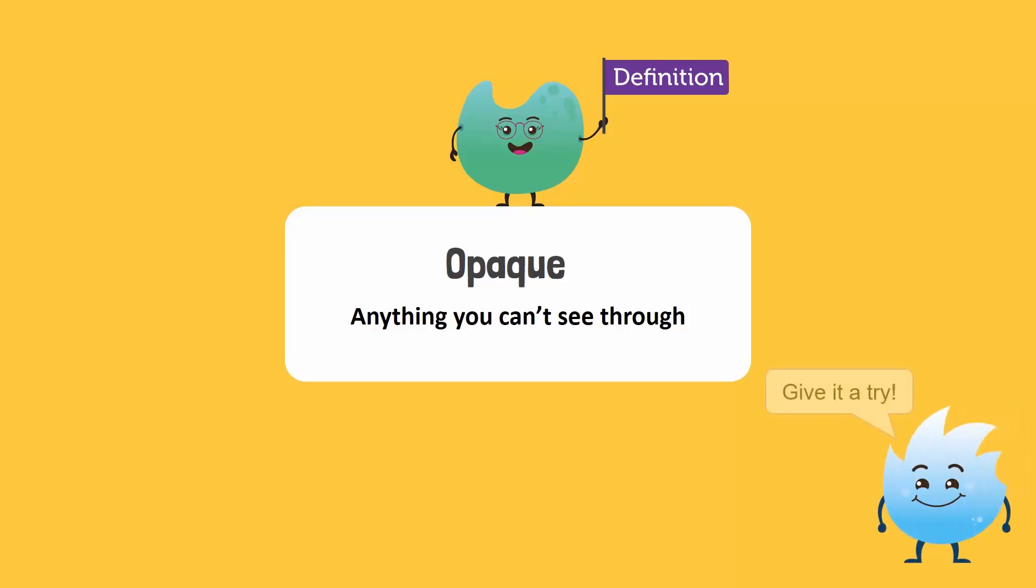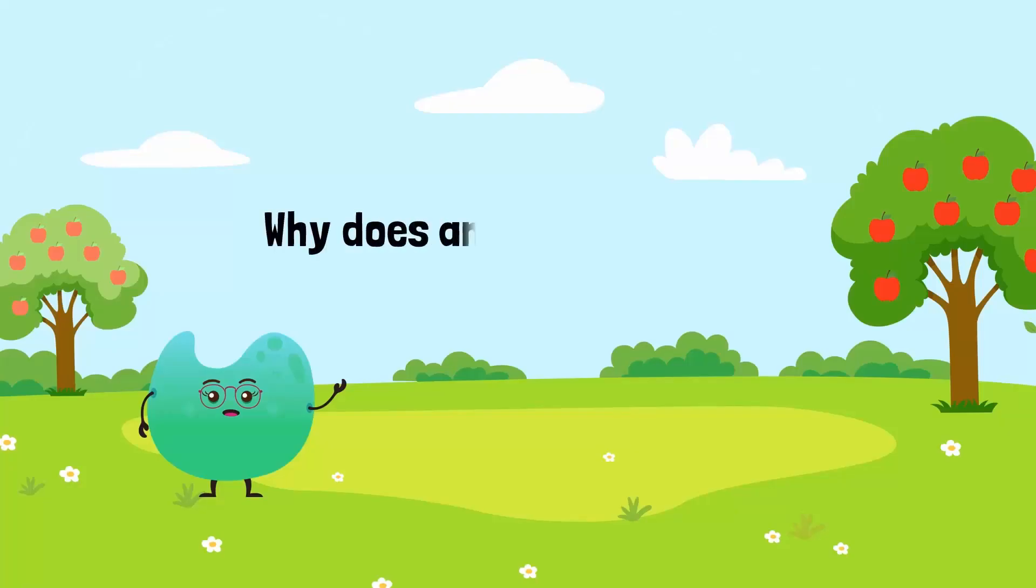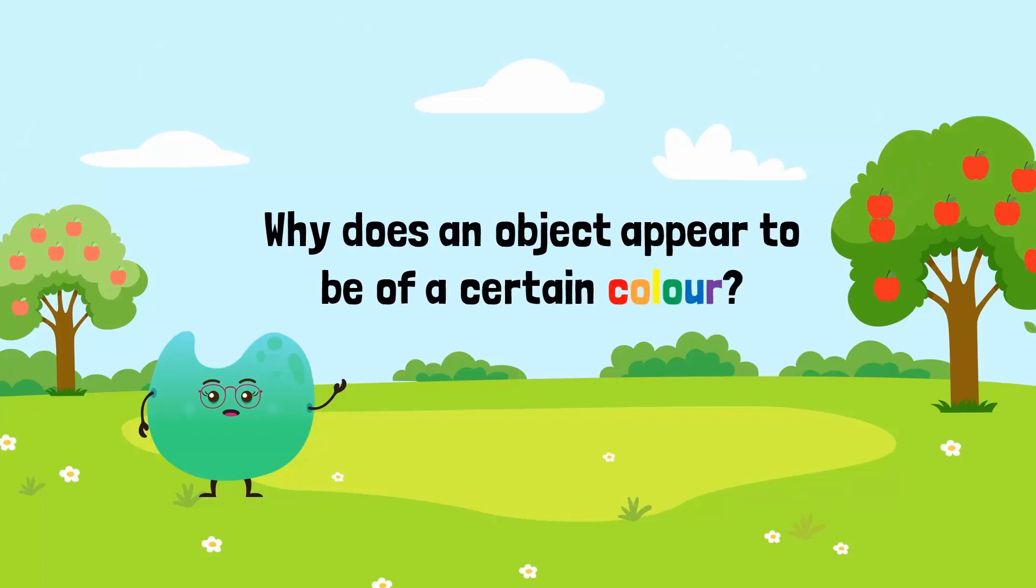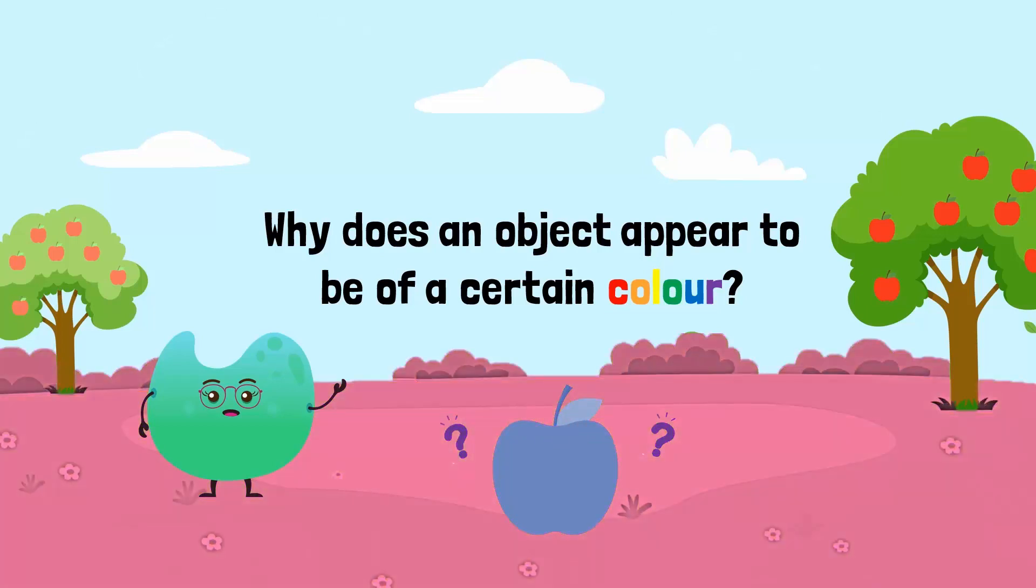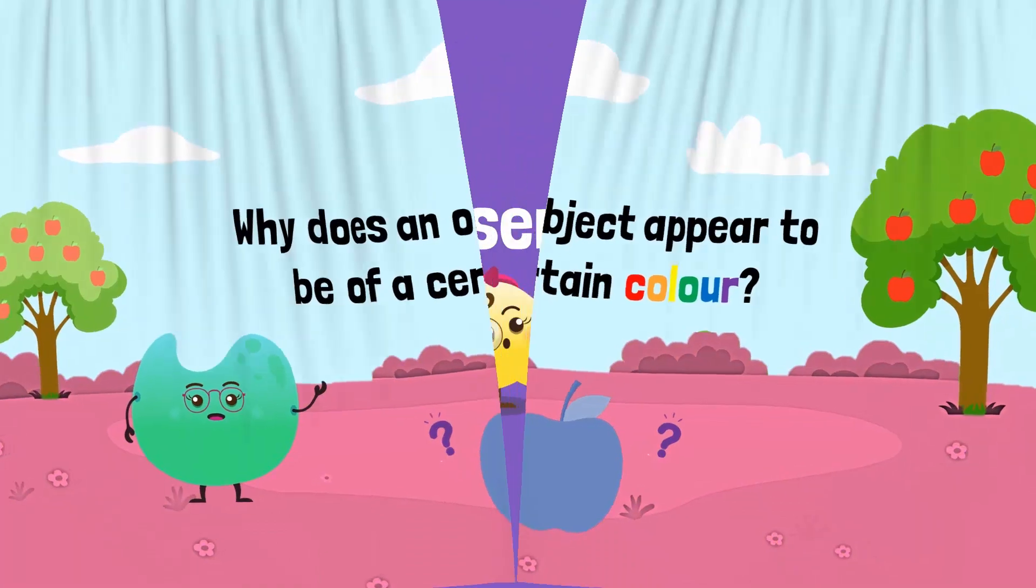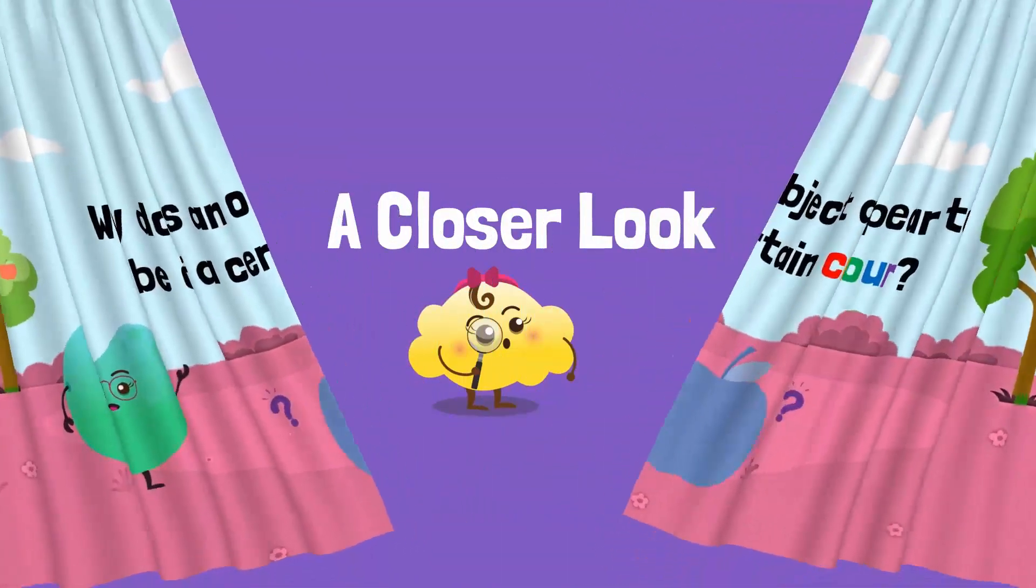Go on, can you look through them? No, they are opaque. But why does an object appear to be of a certain color? Why is an apple red and not blue, or the grass green and not pink? Let's take a closer look.